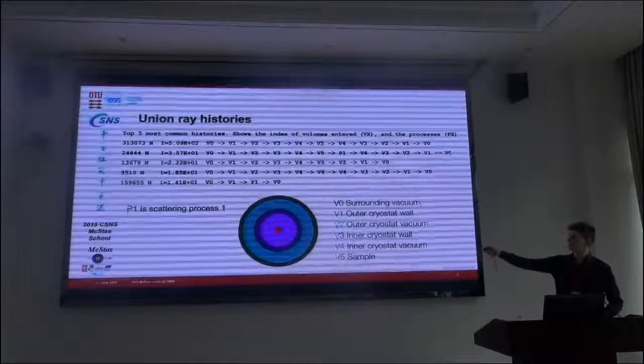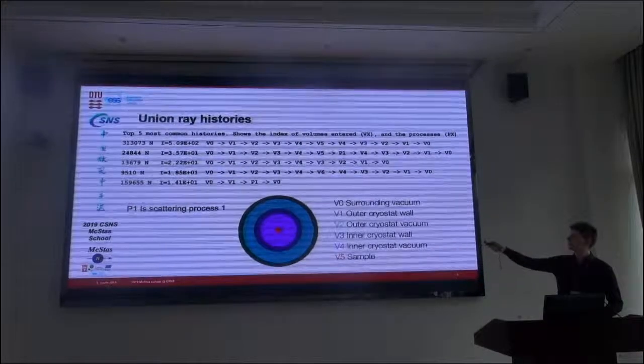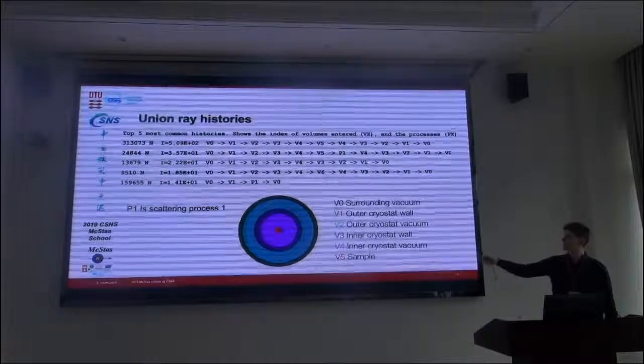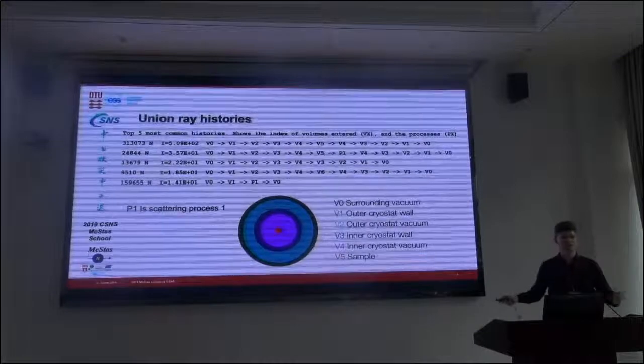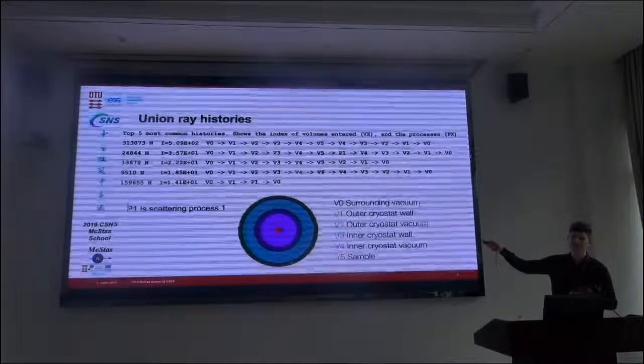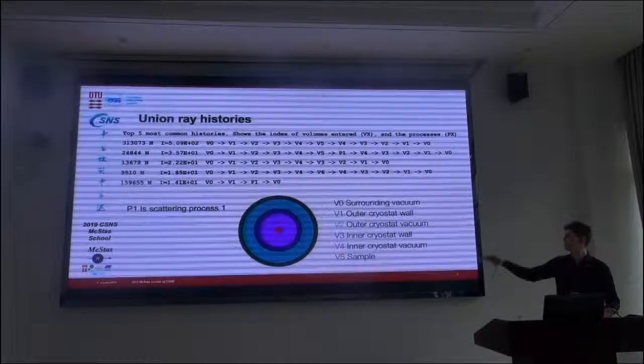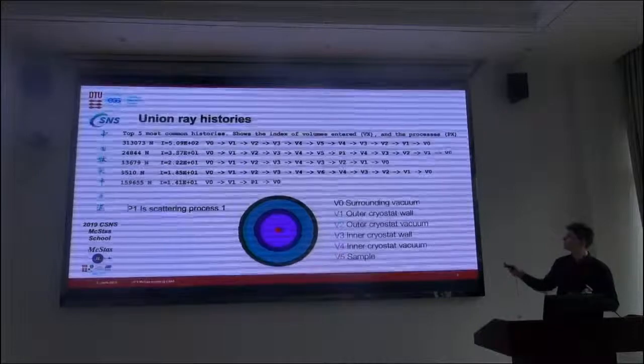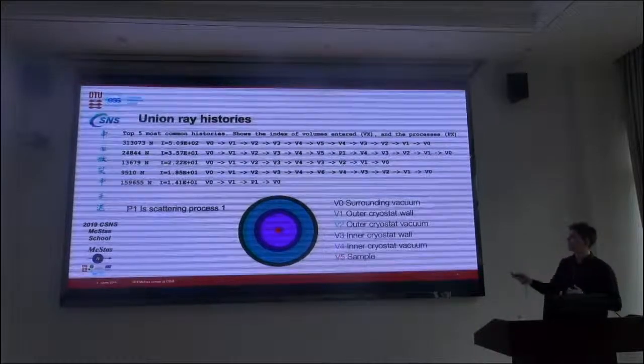The next most probable thing to happen is actually to scatter in the sample. This is this T1. It means scattering process 1. And it happened after, or when we were inside, volume 5, which is the sample. So this is one scattering event in the sample.